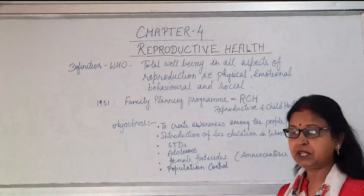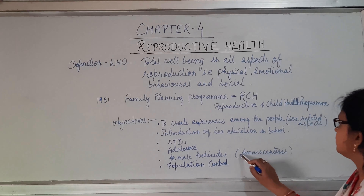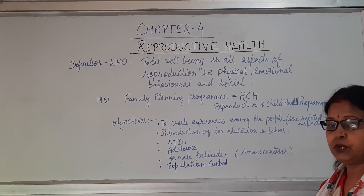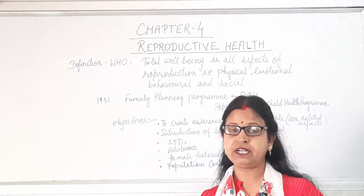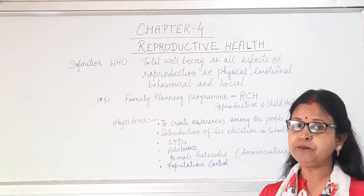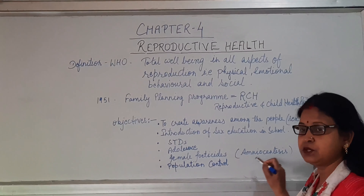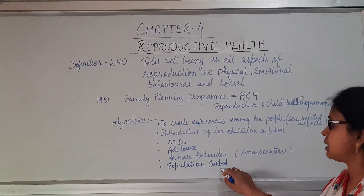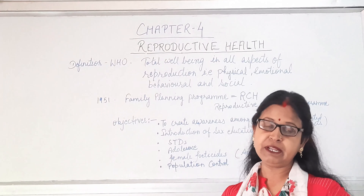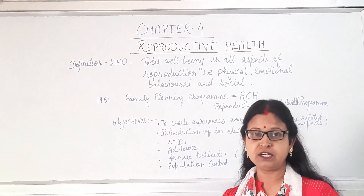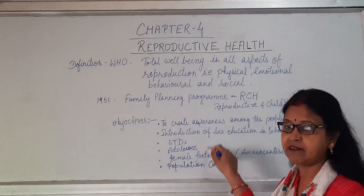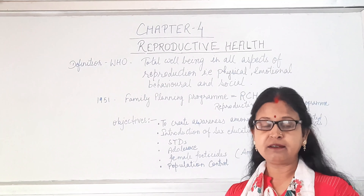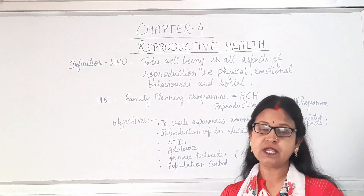Female feticide is another concern. Amniocentesis is a technique that allows testing of the fetus during early stages, including determining the sex of the child. Nowadays, amniocentesis is being misused for female feticide, and that should be stopped. Population control is also necessary since our population is growing at an alarming rate. Awareness should be spread through audio-visual media and print media by government organizations as well as NGOs working in this field.